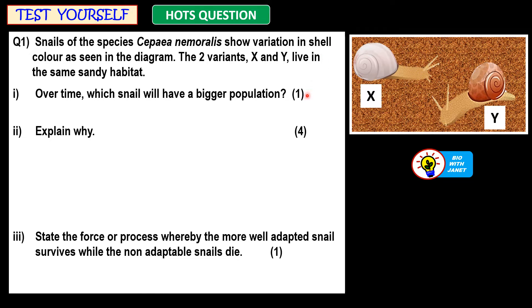Over time, which snail will have a bigger population? Explain why — four marks. And lastly, state the force or process whereby the more well-adapted snail survives while the non-adaptable snails die.